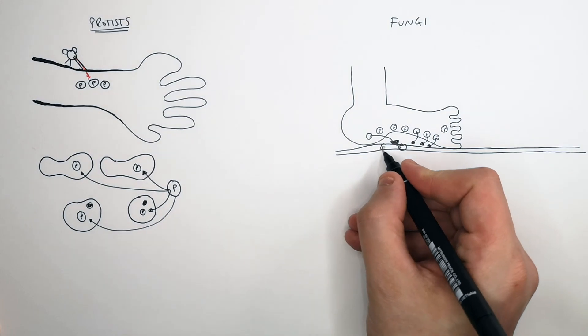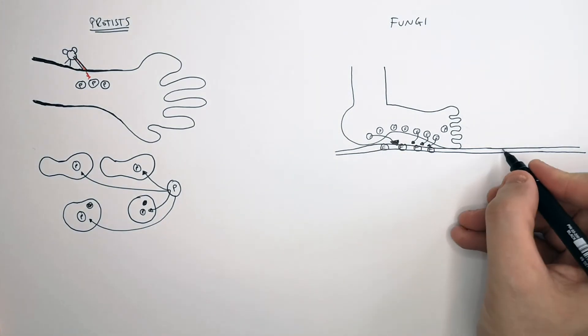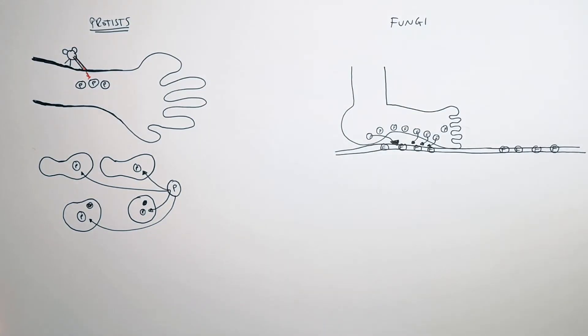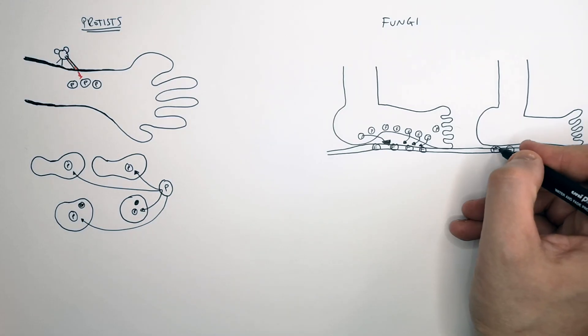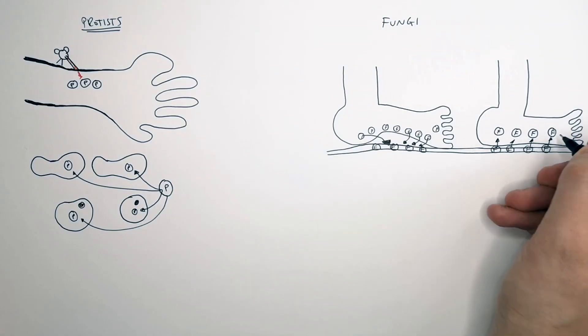So if someone else's foot then touches that surface, by direct contact, that fungus is then going to be transferred onto the other person's foot. So the person by direct contact is going to have the fungus transferred to their foot and they're then going to have athlete's foot.